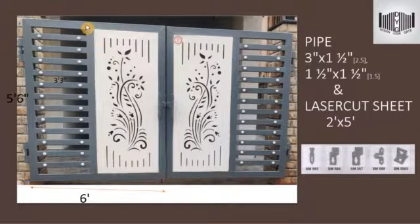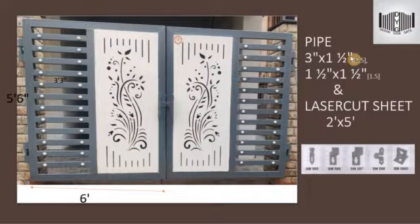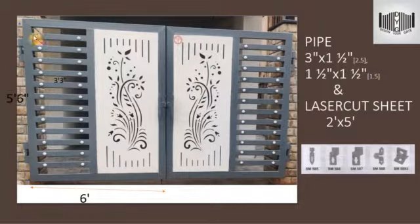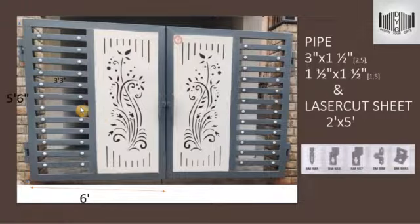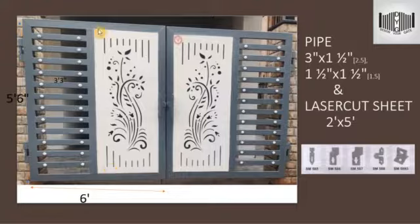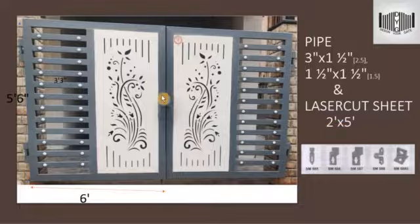The height of the frame is 5 feet 6 inches and the width is 6 feet. For the internal part, a 1.5 by 1.5 inch square pipe is used - you can also go with 1.2 inch as there is no load on this part. The internal width is 3 feet 3 inches. The main heart of the gate - what gives it its look - is the laser cut sheet. The laser cut sheet used here is 2 feet wide and 5 feet tall, and the same structure is on the second gate on the opposite side.